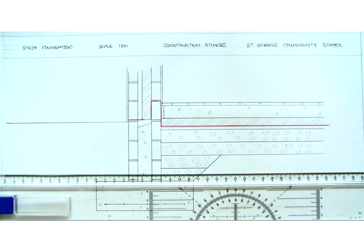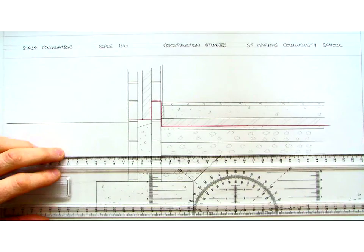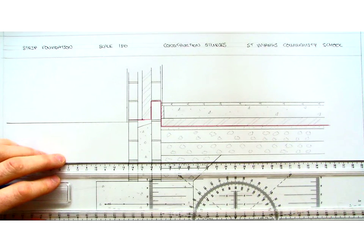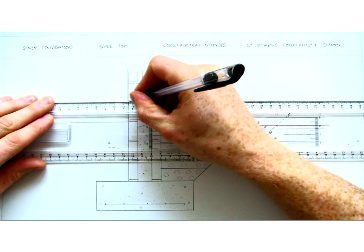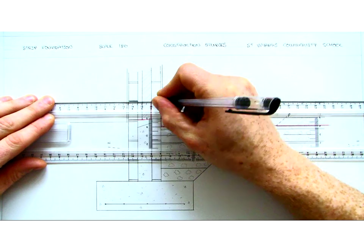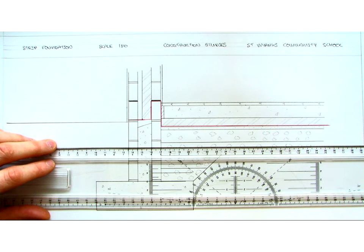The last thing we need to indicate on our drawing is our DPC. Our DPC is placed 150mm above the ground level to prevent any rising damp from getting up into the blocks. So from the top of our fourth block, which is the first block above the ground level, we can mark in our DPC. We can either use a blue or black pen. And the same can be done on the internal wall and that is our DPC marked.